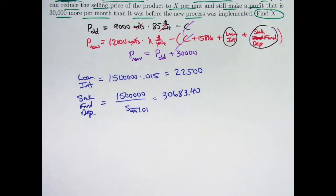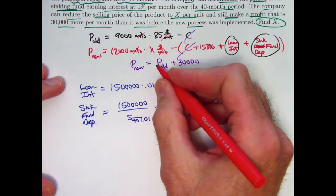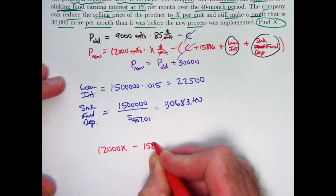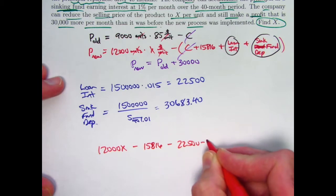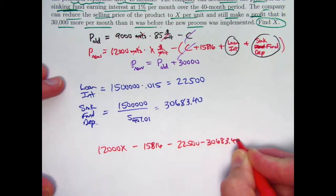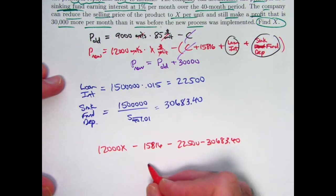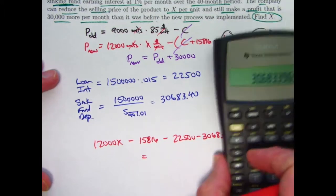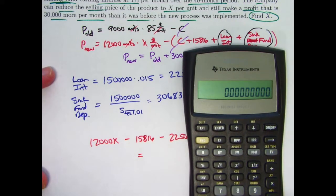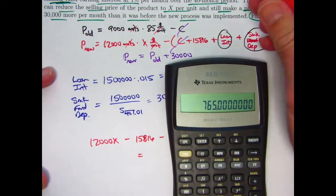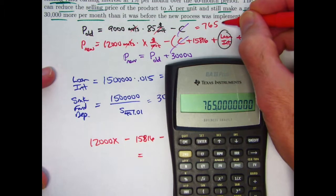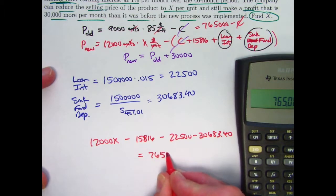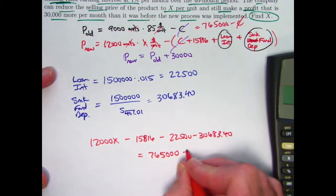So what do we have? What equation do we need to solve for X? P_new with the C canceled out is going to be 12,000X minus $15,816 minus $22,500 minus $30,683.40. That's P_new with the C subtracted off. What's P_old with the C subtracted off plus $30,000? I guess I never wrote down what 9,000 times 85 was. 9,000 times 85 is $765,000. Again, that C got canceled. So P_old is $765,000 minus C, but it was canceled. So I don't have to write it down plus $30,000.